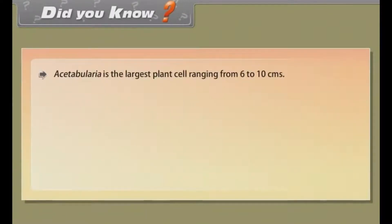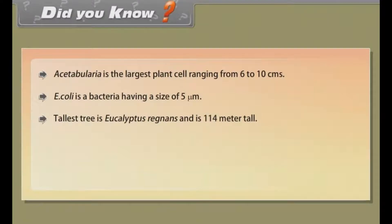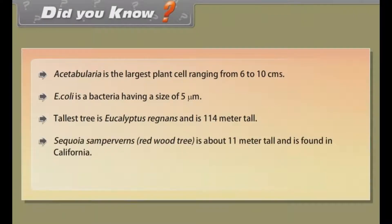Did you know? Acetabularia is the largest plant cell, ranging from 6 to 10 cm. E. coli is a bacterium having a size of 5 micrometers. The tallest tree is Eucalyptus regnans at 114 meters tall. The Sequoia sempervirens redwood tree is about 11 meters in diameter and is found in California. The elephant is the largest land animal.